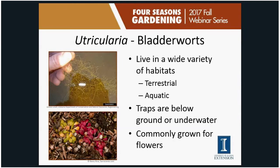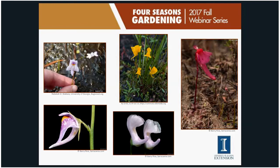Bladderworts have bladder traps and live in a wide variety of habitats — both terrestrial and aquatic, including waterlogged soils, lakes, and streams. All need abundant water because bladder traps won't work without moisture. The traps are below ground for terrestrial species or underwater for aquatic ones. Most people grow these for their flowers, which come in pinks, purples, white, yellow, and red — quite pretty when you have a good mass of them.